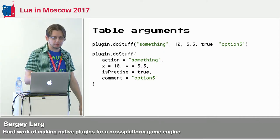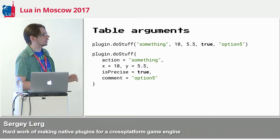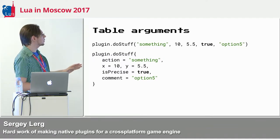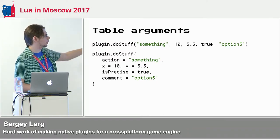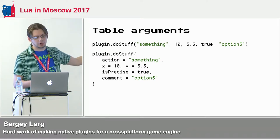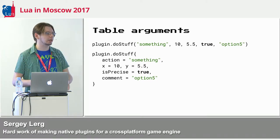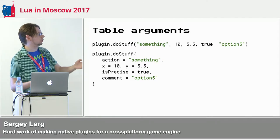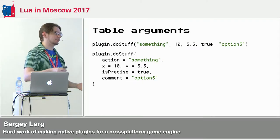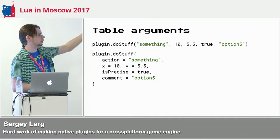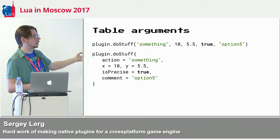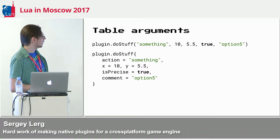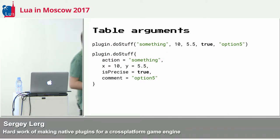When you provide an API for your plugin, from the beginning functions in Lua don't have named arguments — you can only have them in series. This is fine for small stuff, but when your plugin gets more and more complex, you really want named arguments because there are many optional parameters and you always forget which is what. After a few years you look at it and don't remember the parameters and always have to go to documentation. With named arguments, it's much more obvious. I like to use a table as a container for the named arguments.